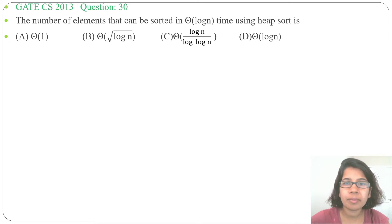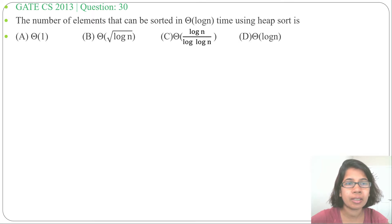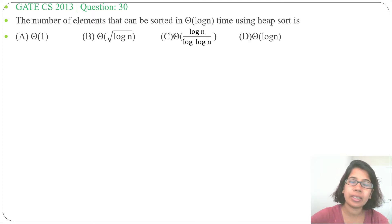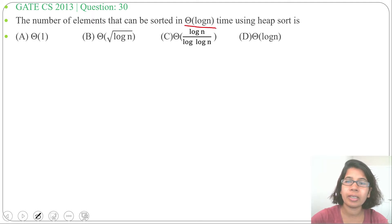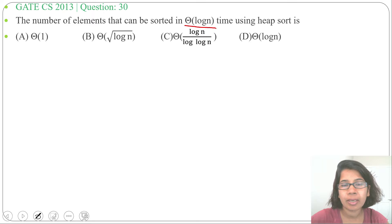Hi, let's solve one previous question of heap sort. This question was asked in GATE CS 2013, question number 30. The question is: the number of elements that can be sorted in theta of log n time using heap sort is — and four options are given.